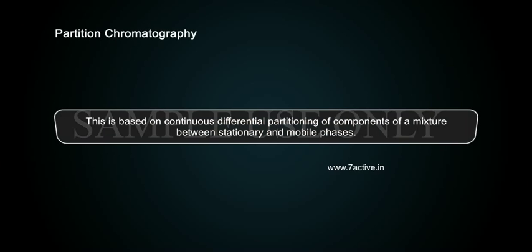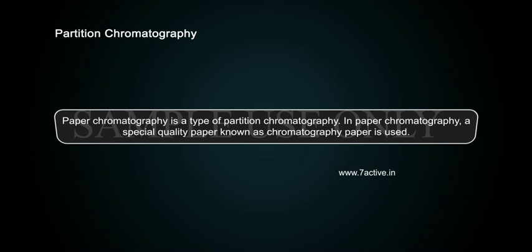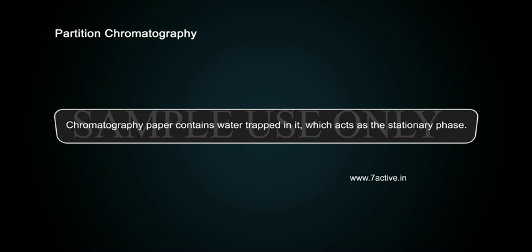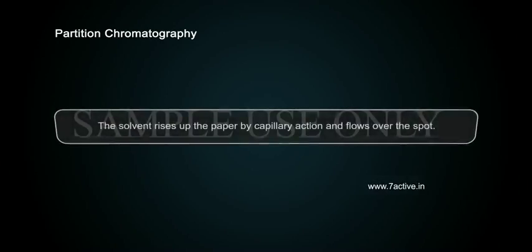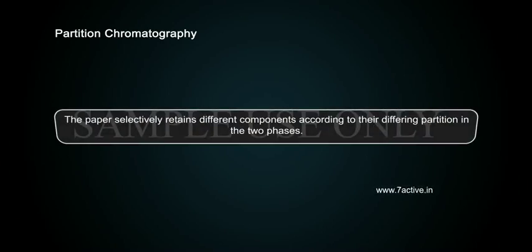Partition Chromatography is based on continuous differential partitioning of components of a mixture between stationary and mobile phases. Paper chromatography is a type of partition chromatography. In paper chromatography, a special quality paper known as chromatography paper is used. Chromatography paper contains water trapped in it, which acts as the stationary phase. A strip of chromatography paper, spotted at the base with the solution of the mixture, is suspended in a suitable solvent or mixture of solvents. The solvent rises up the paper by capillary action and flows over the spot. The paper selectively retains different components according to the differing partition in the two phases.